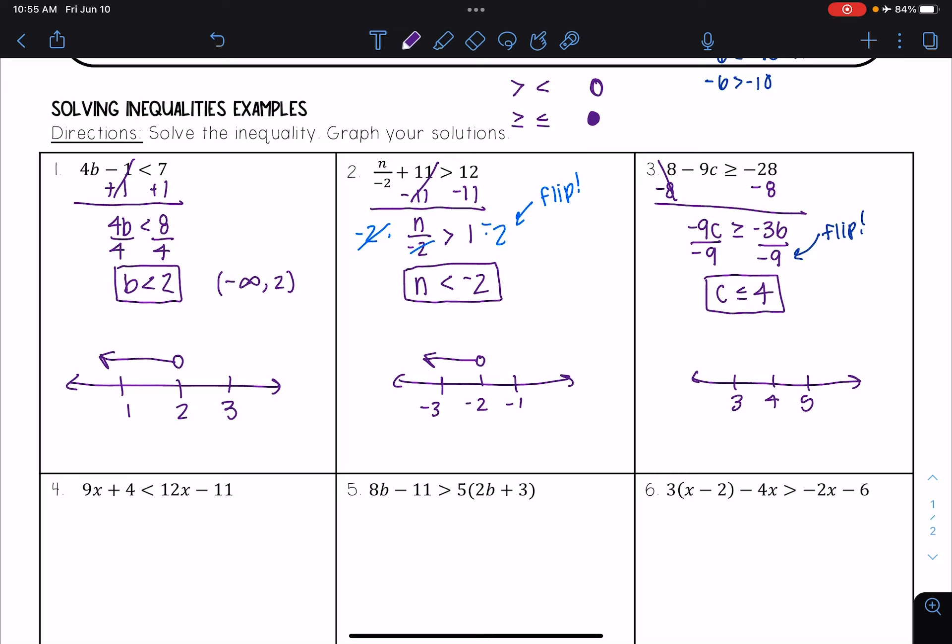I'm going to graph that here. I have a less than or equal to, so that means I need a closed circle and everything to the left.